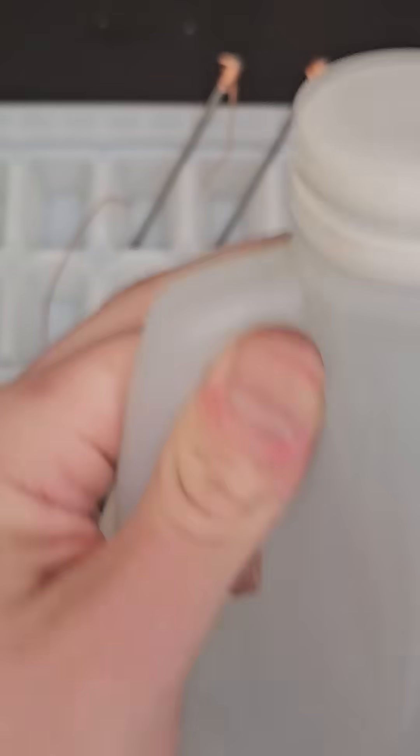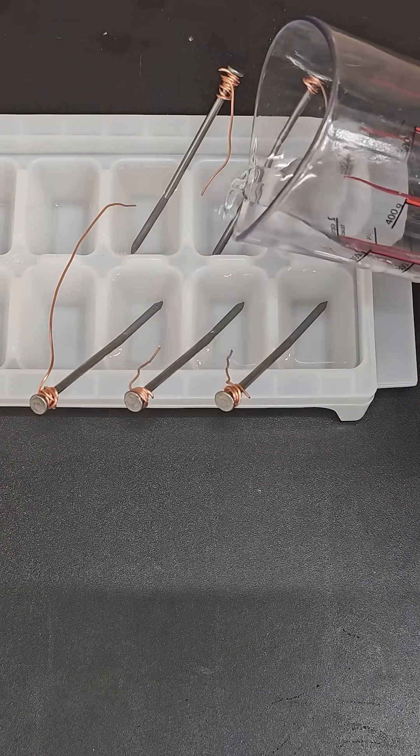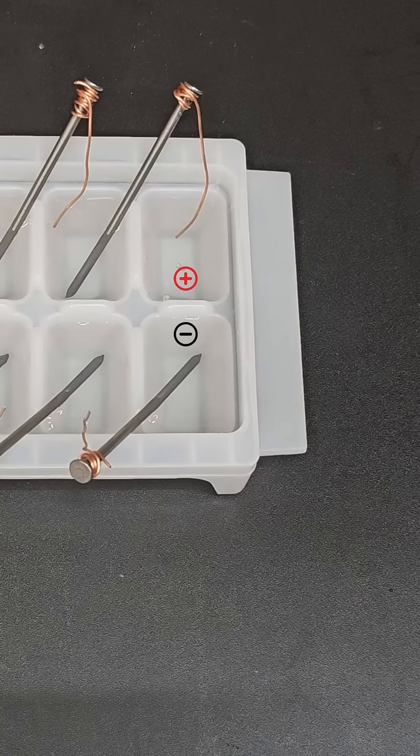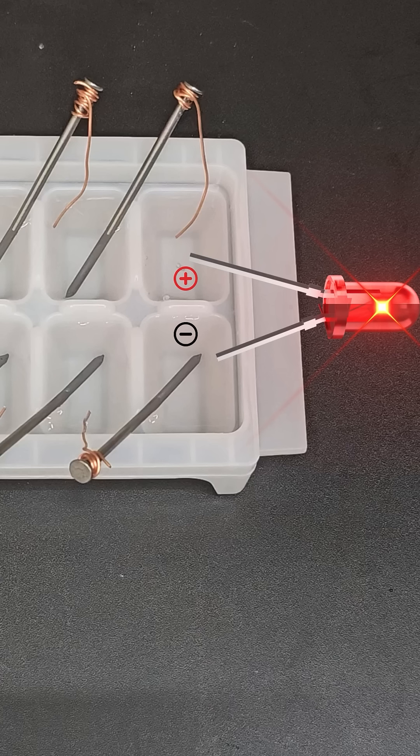Next take some vinegar and fill up each spot on the ice cube tray, making sure that each copper wire is submerged. You've now made a multi-cell electrochemical battery. If I add an LED to complete this circuit by bridging that gap, the LED will light up.